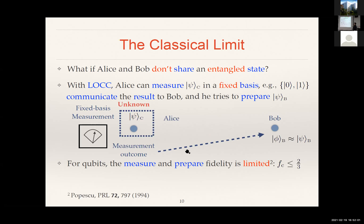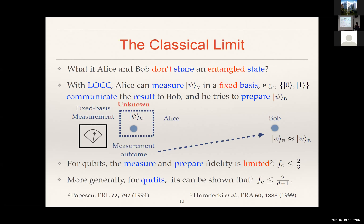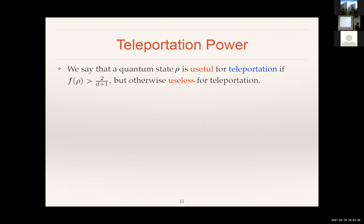And in the more general case, if you're interested in teleporting higher dimensional quantum states, it was shown later by the Horodeckis that this is still limited, and it's limited by 2 divided by d plus 1, where d is the dimension of the local Hilbert space. So for the rest of this talk, I'll say that if you give me a density matrix and I evaluate this teleportation fidelity, and if it actually beats this classical threshold, I'll say that it's useful for teleportation; otherwise, I'll say that it's useless.